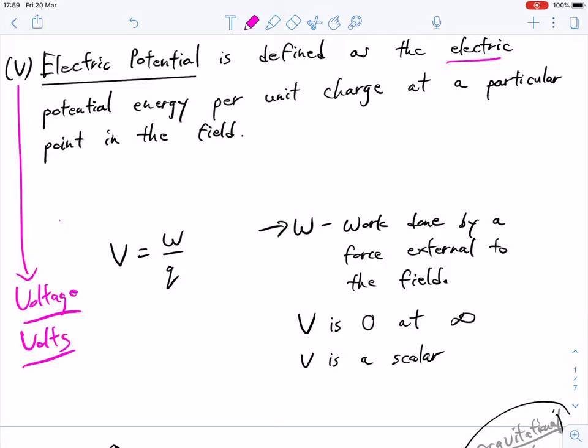It's defined as the electric potential energy per unit of charge at a particular point in the field. The fact that it's a scalar means we don't care about direction. It's just at that particular point, it has this much energy. There's nothing to do with direction.